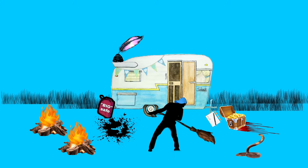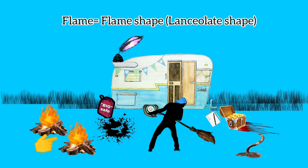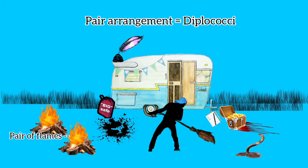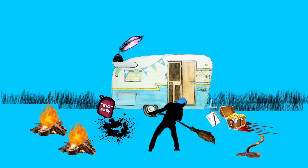You can see the man has set up a fireplace. The two flames represent the flame shape of the bacteria, which is also called lanceolate shape. Being arranged in pairs, these flames represent that these organisms are diplococci.